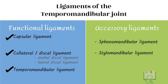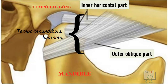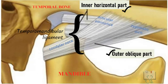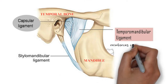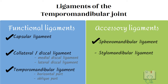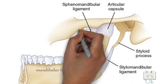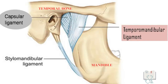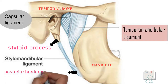The temporomandibular ligament has two parts: a horizontal part and an oblique part. Both the outer oblique part and inner horizontal part attach the condylar neck to the articular tubercle and zygomatic arch. The temporomandibular ligament reinforces the capsular ligament. The sphenomandibular ligament is seen from the medial side and runs from the spine of the sphenoid bone to the lingula in the mandible. The stylomandibular ligament runs from the styloid process to the posterior border of the ramus of the mandible.